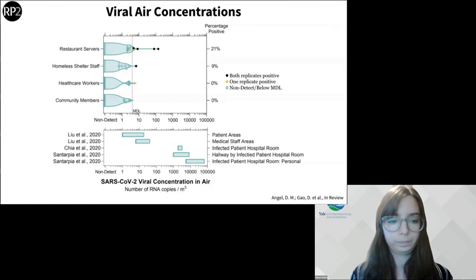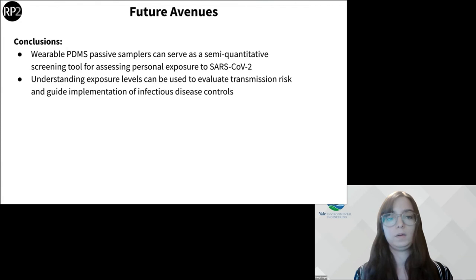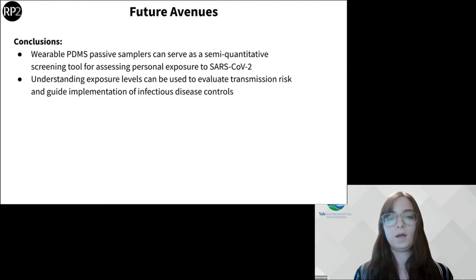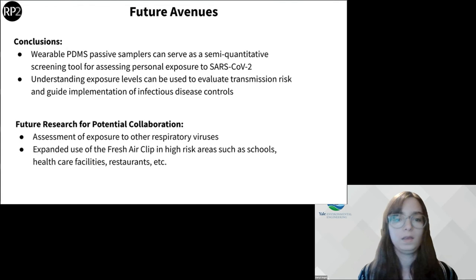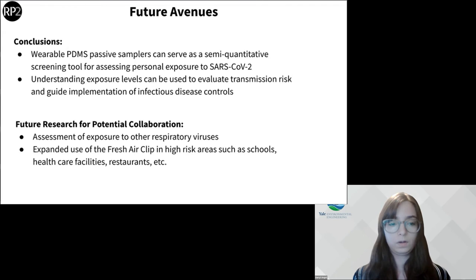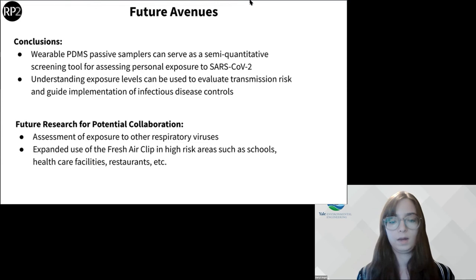We demonstrated that a PDMS-based passive air sampler can serve as a semi-quantitative tool to assess personal exposure to SARS-CoV-2 among indoor environments. With increased sample size, this can be expanded to understand exposure levels, evaluate transmission risk, and guide prevention and control strategies for respiratory viruses in indoor settings. Future research includes expanding to other respiratory viruses, increasing sample size particularly in high-risk areas such as schools not previously studied, expanding healthcare facility deployment, and targeting areas with low vaccination rates.